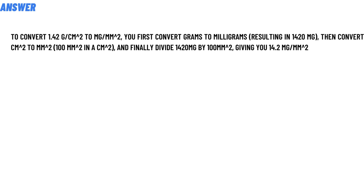Converting grams to milligrams results in 1420 mg. Then convert cm² to mm²: there are 100 mm in a centimeter squared. Finally, divide 1420 mg by 100 mm², giving you 14.2 mg/mm². So that is the answer of the question.